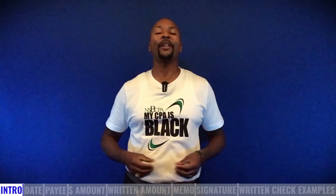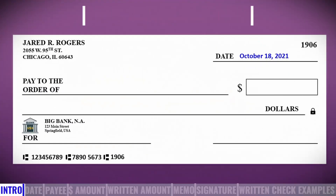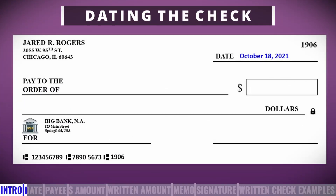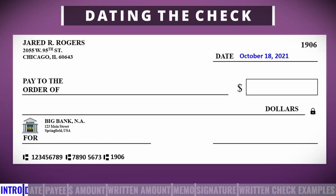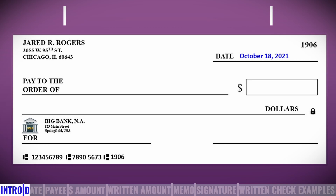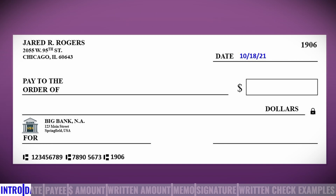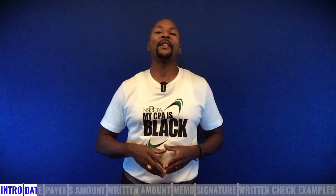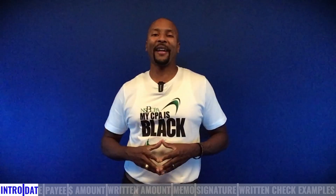So now let's see how to write out a rent check to our landlord as an example. Step one: dating the check. You can write out the date in word or numerical format. I typically use the numerical format because it's faster to write.